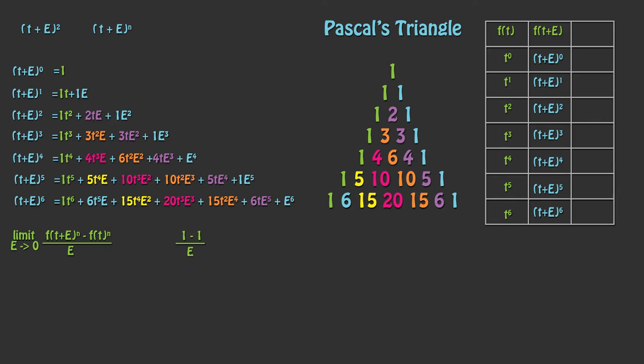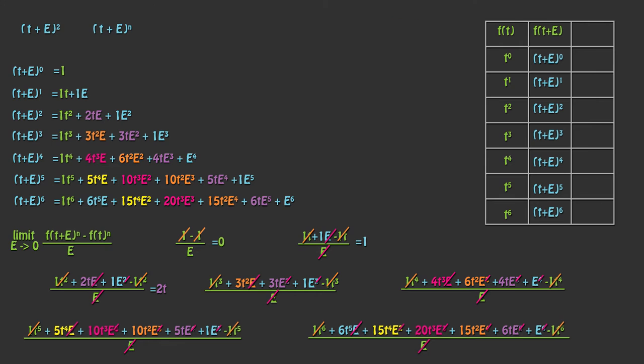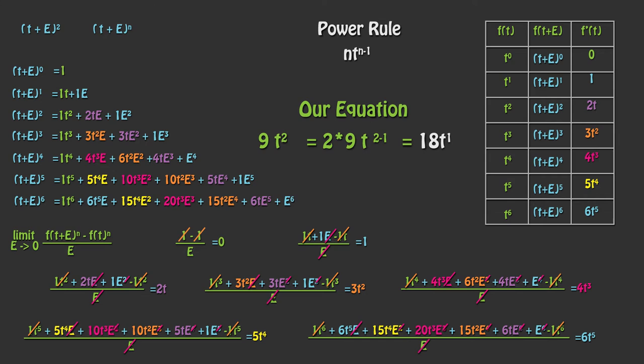cancelled out terms, and then he ended up with n times t to the n minus 1. If we look back at our function, this actually works. The 2 comes out in front and then the power is 2 minus 1. This is called the power rule. It allows us to take equations like this and find the derivative within seconds. There are whole tables you can use to determine how to take derivatives of more complex functions.